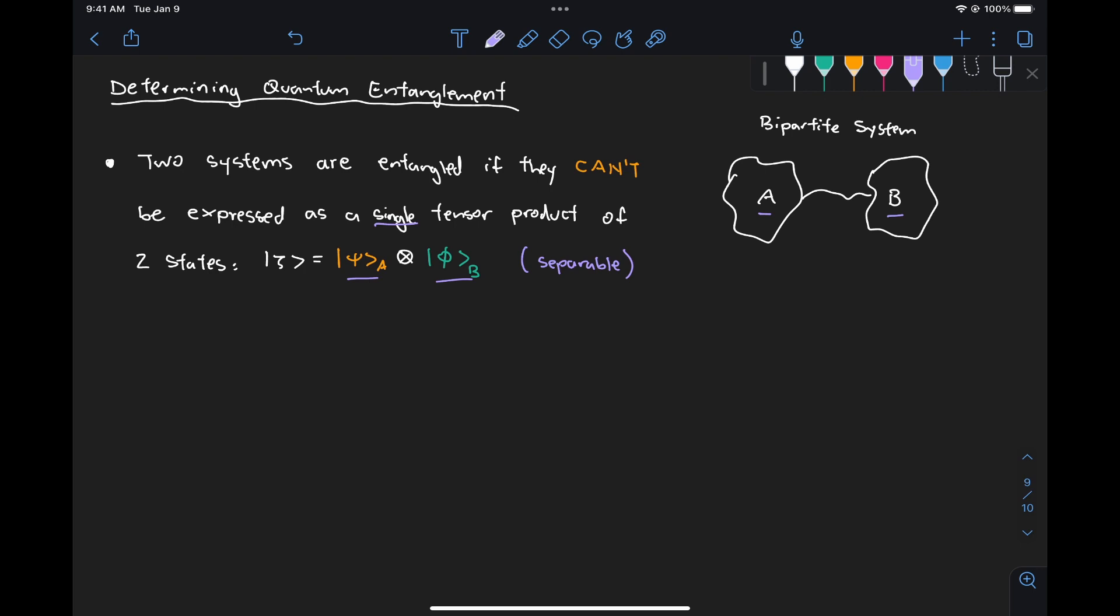So let's take a look at a few examples and see how easy it is to determine if a state is separable or entangled. For example, here we have a two-qubit system and this is a very trivial example because we already have this written as a single tensor product for something for subsystem A, so in this case it will be just a single qubit in state 0, and then something for subsystem B. So we say that this state is separable, right?